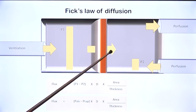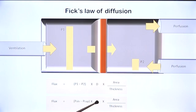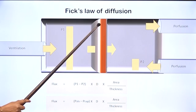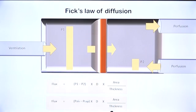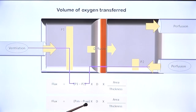For effective diffusion to occur, there must be good ventilation and good perfusion. Flux is dependent on alveolar partial pressure of oxygen, capillary partial pressure of oxygen, and the diffusion coefficient of the gas. Area and thickness of the respiratory membrane also affect diffusion. Ventilation maintains alveolar partial pressure at a high value, while perfusion maintains capillary partial pressure at a low value.